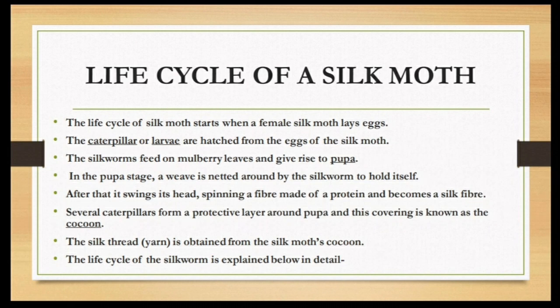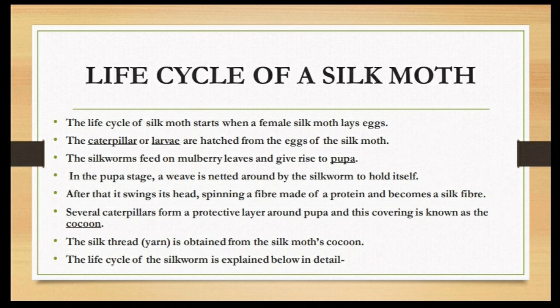The silkworms feed on mulberry leaves and give rise to pupa. In the pupa stage, a weave is netted around the silkworm to hold itself. After that, it swings its head, spinning a fiber made of protein, which becomes a silk fiber. Several caterpillars form a protective layer around the pupa, and this covering is known as the cocoon.